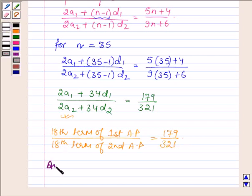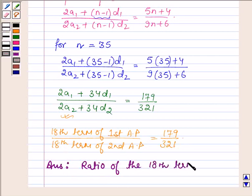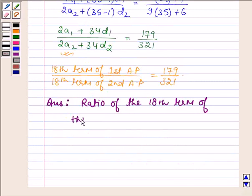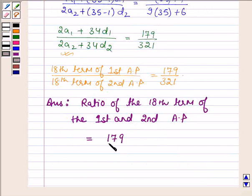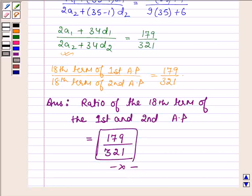And this is nothing but the 18th term of the 1st AP upon the 18th term of the 2nd AP, which is equal to 179 upon 321. Therefore, the ratio of the 18th term of the 1st and 2nd arithmetic progression is equal to 179 upon 321. This completes the solution — take care and bye for now.